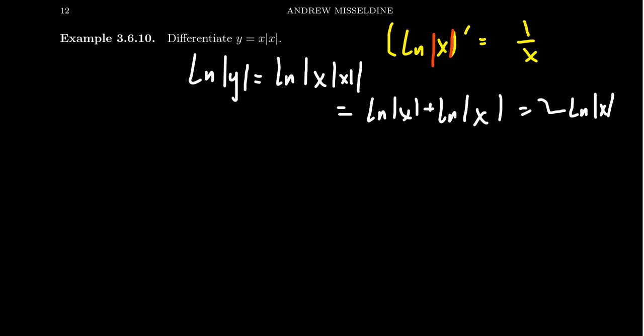Then when we take the derivative of both sides with respect to x, the left hand side will become y prime over y, like it always does with logarithmic differentiation. The right hand side will then become two over x. Times both sides by y, you get y prime equals two y over x.